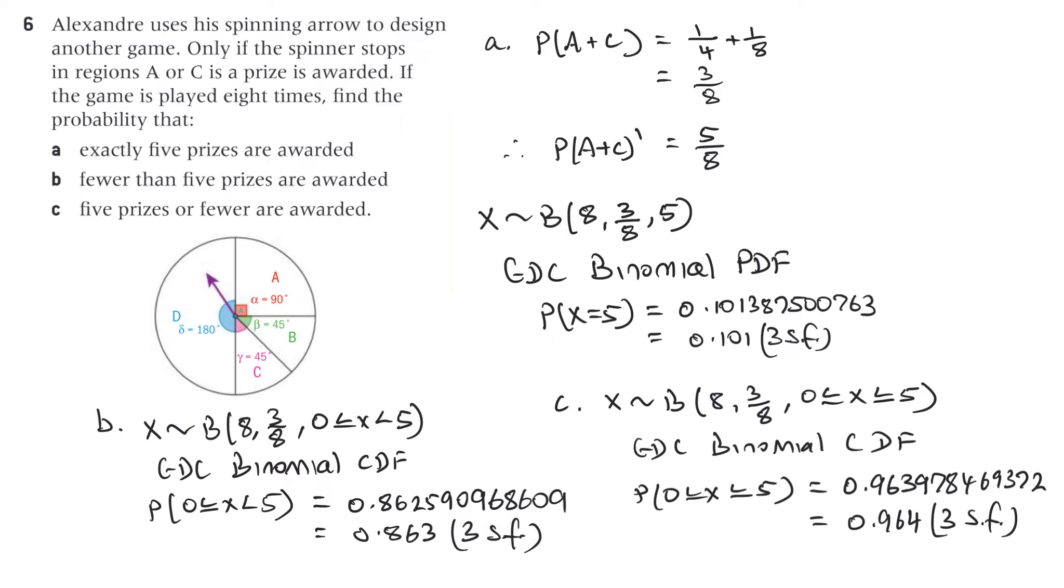Part C: five prizes or fewer are awarded. While X is distributed binomially. Again, it's played eight times. The probability is three on eight. And it says five prizes or fewer are awarded. So that's X is greater than or equal to zero or less than or equal to five. And that's a GDC binomial CDF again. And we get 0.963978469372, which is 0.964 to three significant figures.